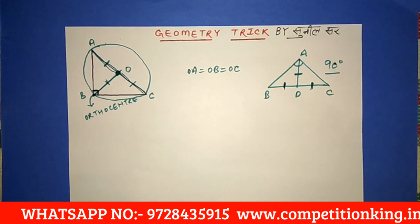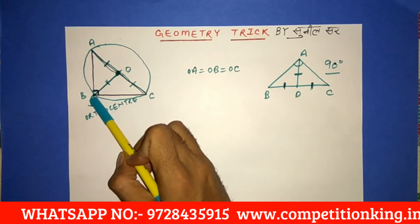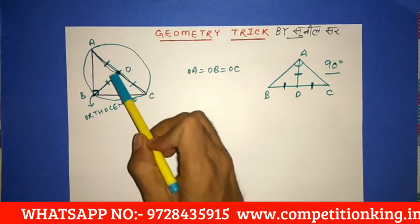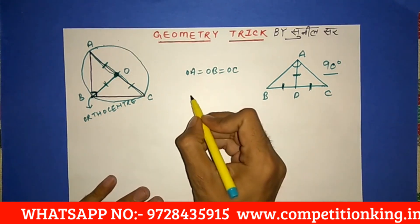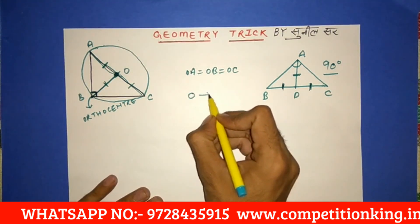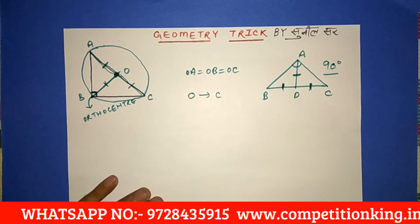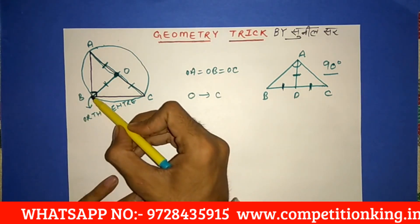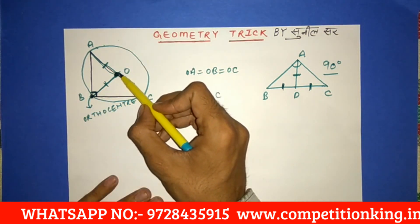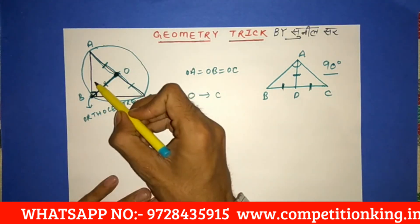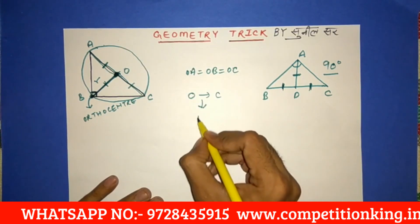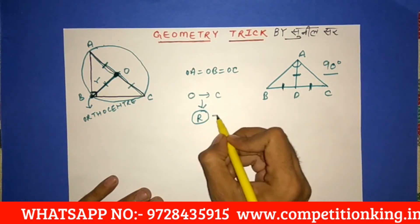We will see the application of this in upcoming questions. This is a very important concept. The orthocenter of a right angle triangle is at the vertex where the 90 degree angle is, and the circumcenter is at the midpoint of the hypotenuse. A question can also be asked: what is the distance between the orthocenter and circumcenter? The orthocenter lies at the right angle vertex and the circumcenter at the midpoint, so the distance between them equals the circumradius.